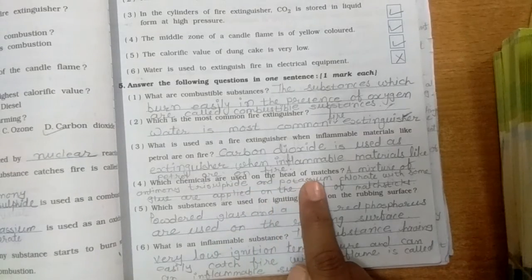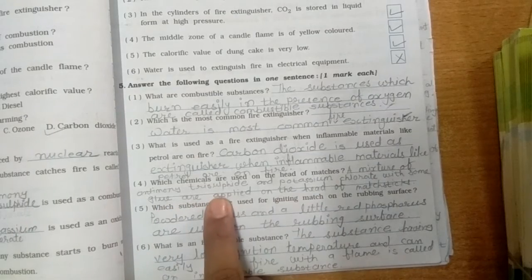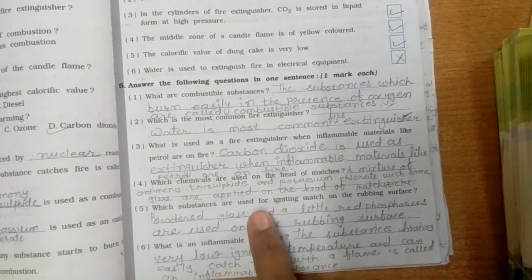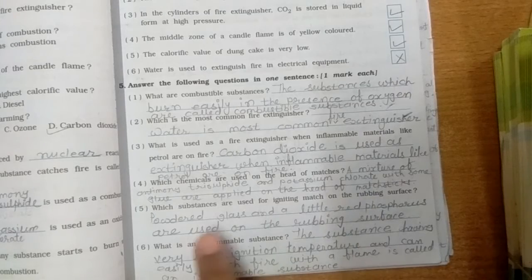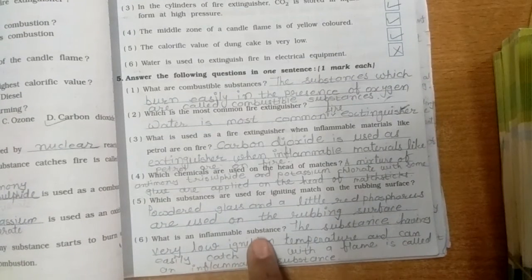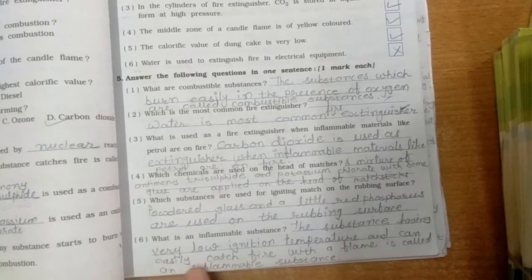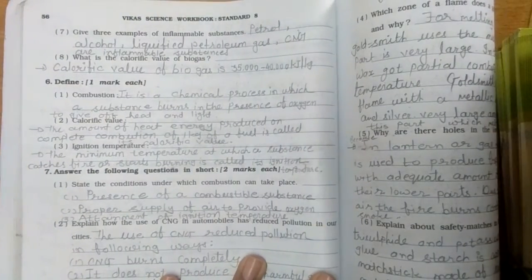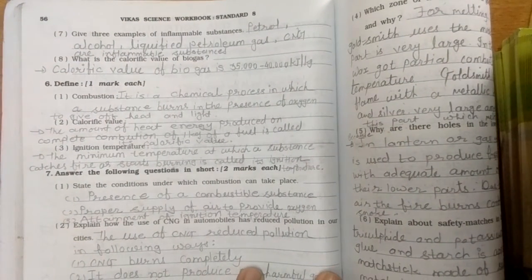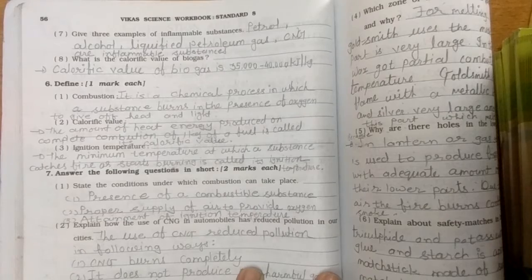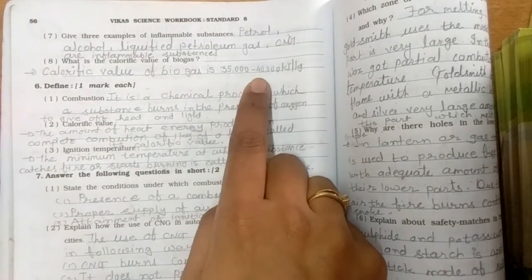Fifth, which substances are used to ignite match on the rubbing surface? Powdered glass and a little red phosphorus are used on the rubbing surface. Six, what is an inflammable substance? The substances having very low ignition temperature and can easily catch fire with a flame are called inflammable substances.